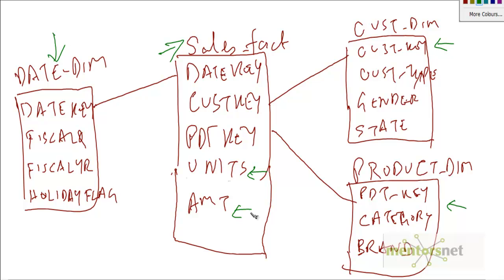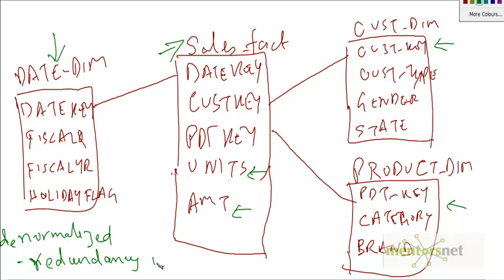The dimension tables describe the measure. The customer dimension describes the customer, the product dimension describes the product. Similarly, the date dimension describes the date — for example, which fiscal year or quarter a date falls in, or whether it is a holiday. These dimension tables are denormalized, meaning redundancy is okay. That's because in the dimensional model we are looking at a model that is very simple to query and maintain. The fact table contains numerous keys — this concatenated key is also called the composite key.